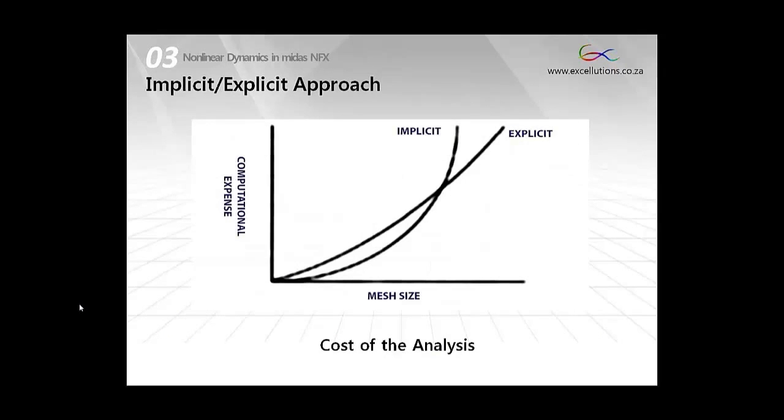Just a quick word on selecting the implicit or explicit method for a specific analysis. In this graph you can actually see that some advantages will exist for smaller mesh sizes using the implicit method, due to the computational effort required to invert the stiffness matrix, and the explicit method being a clear choice for very large models, short time span events, which contains a lot of complex contact, material deformation and large displacements.